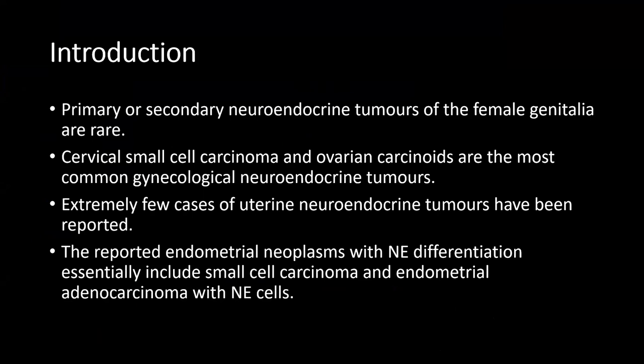A bit about introduction. Primary or secondary neuroendocrine tumors of the female genitalia are rare. Among gynecological neuroendocrine tumors, cervical small cell carcinoma and ovarian carcinoids are the most common. Extremely few cases of uterine neuroendocrine tumors have been reported. The reported endometrial neoplasms with neuroendocrine differentiation include small cell carcinoma and endometrial carcinoma with neuroendocrine cells. They have an annual incidence of about 7 per leg and are a very heterogeneous group of neoplasms derived from the neuroectoderm, neural crest, and the endoderm.